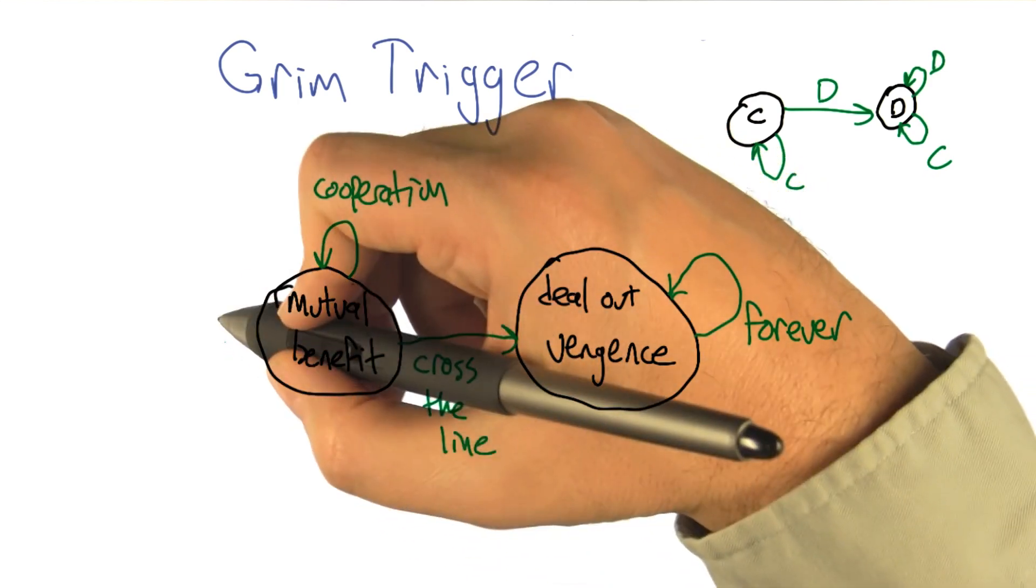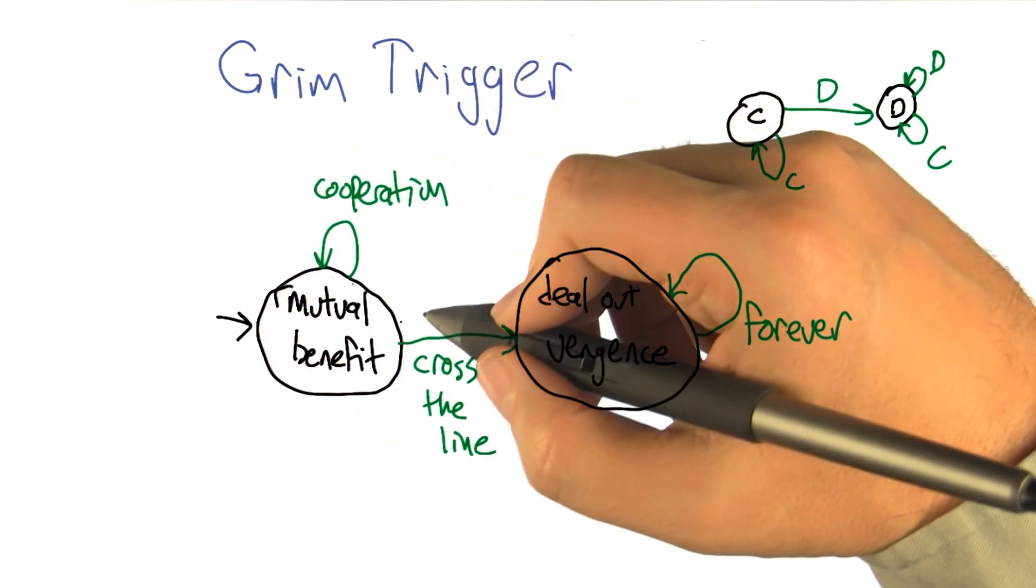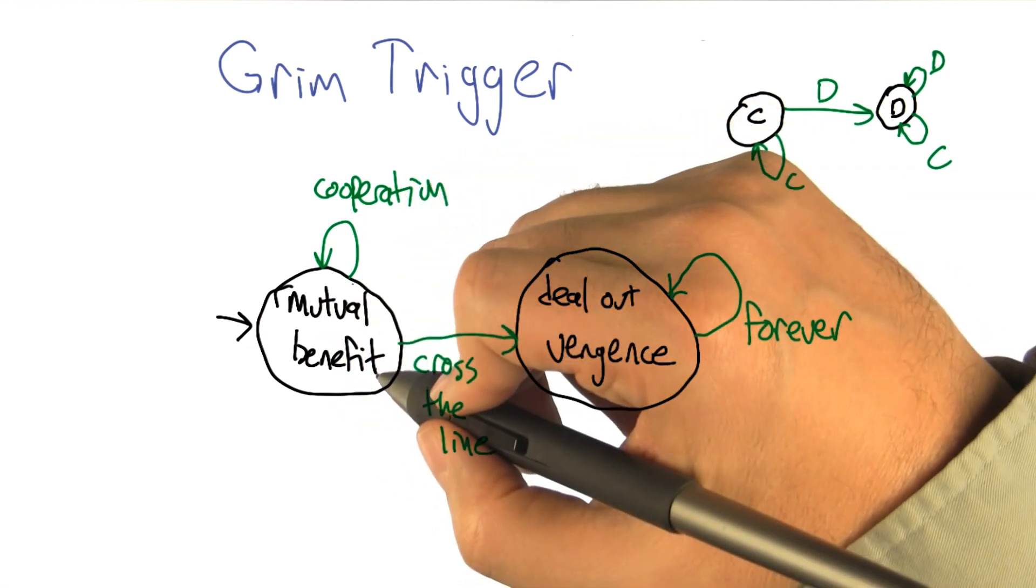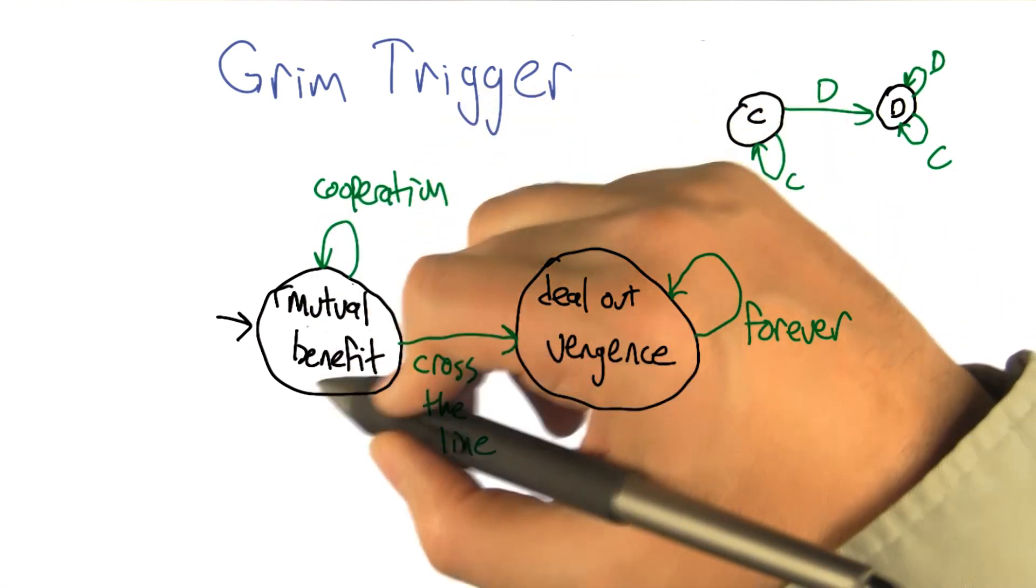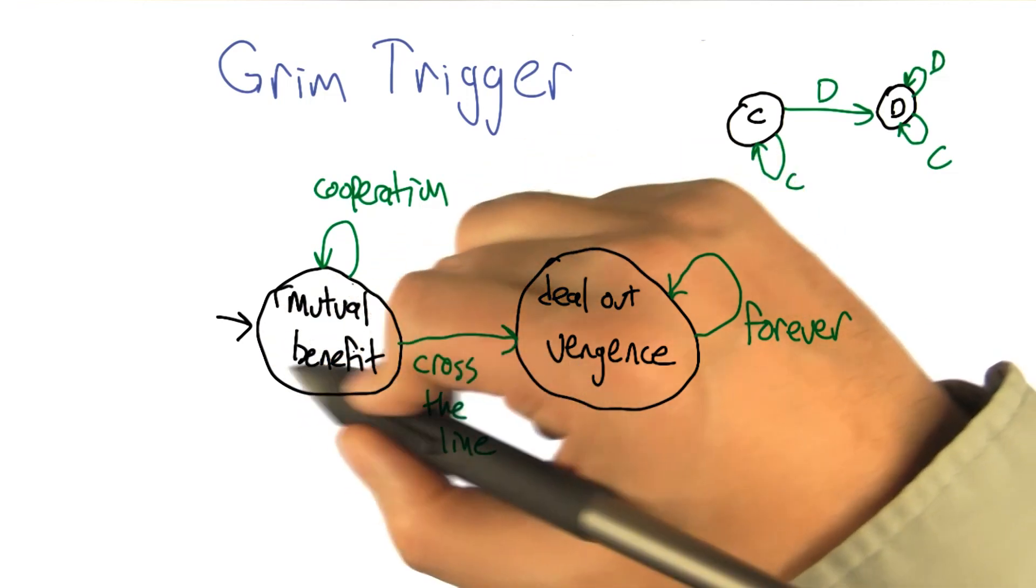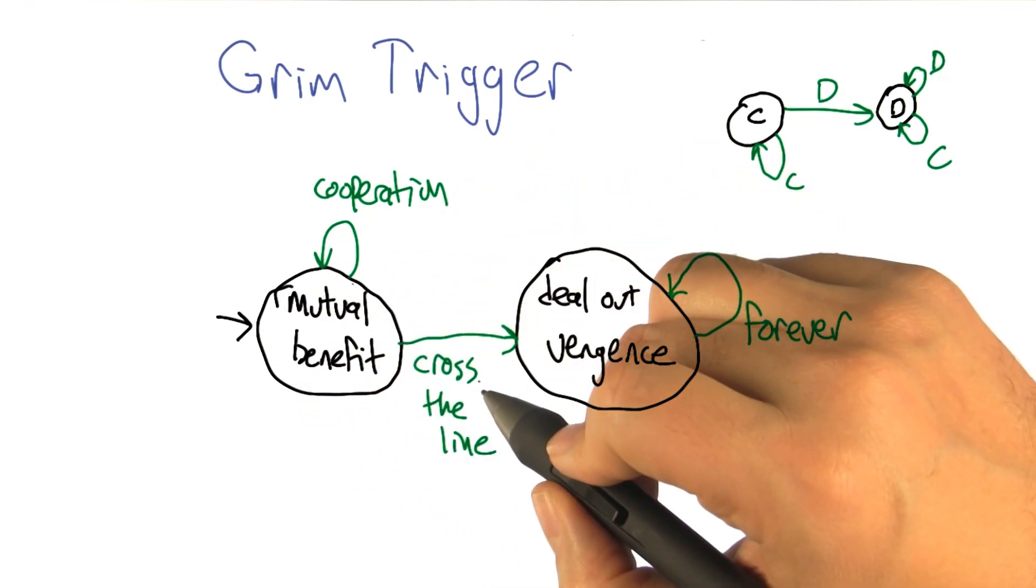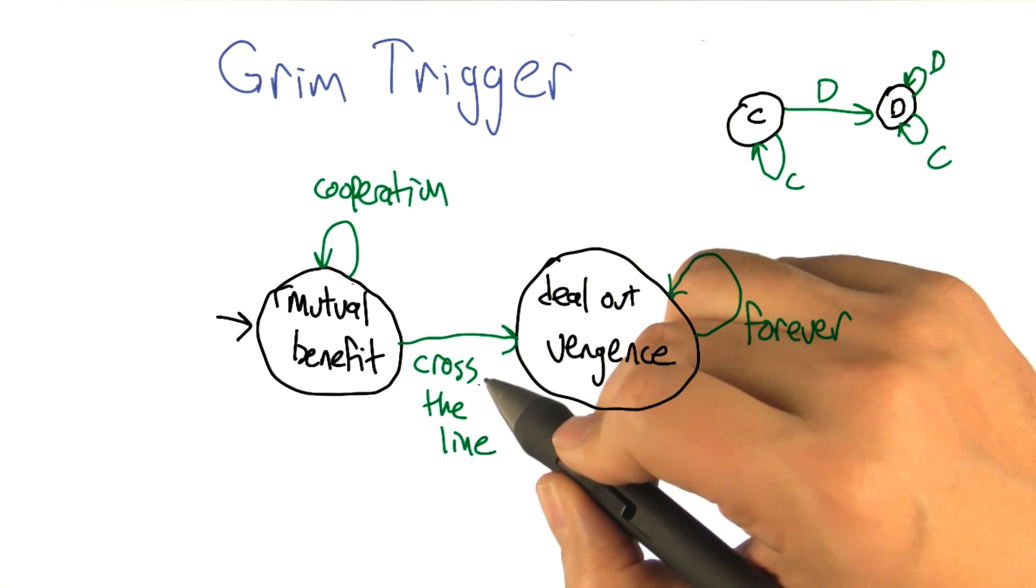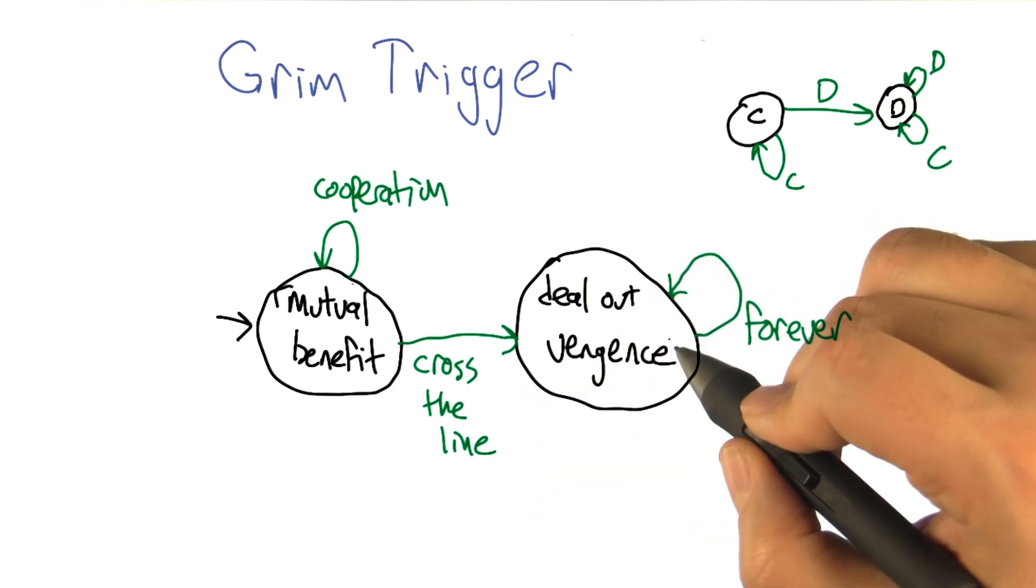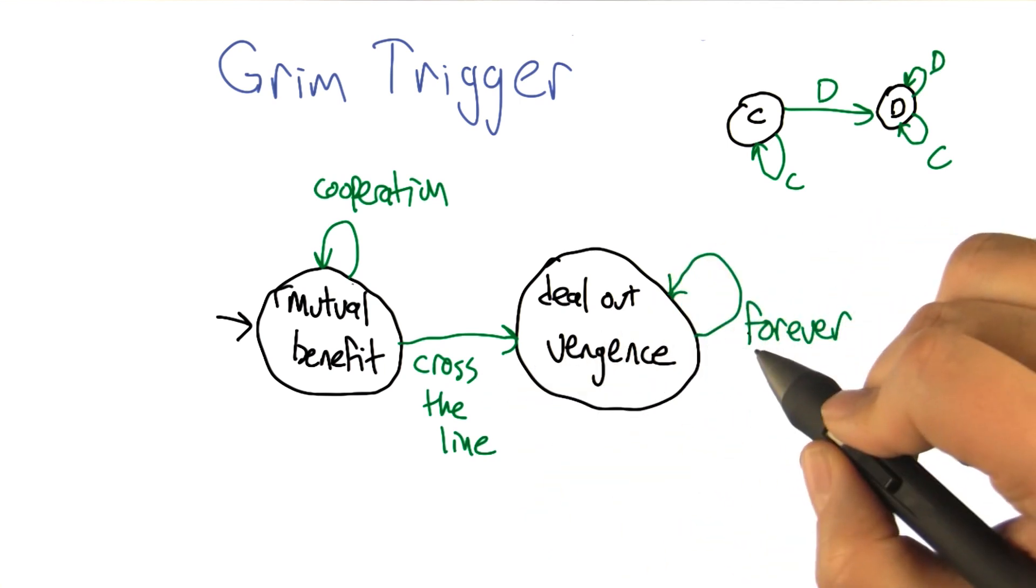It says that what we're going to do is we're going to start off taking some kind of action or pattern of actions that's of mutual benefit. And as long as this cooperation continues, this mutual beneficial behavior will continue. But however, if you ever cross the line and fail to cooperate with me, then I will deal out vengeance against you forever.